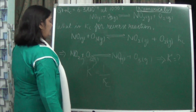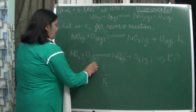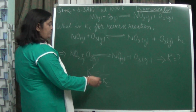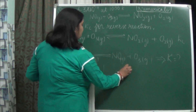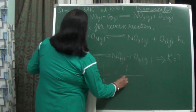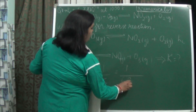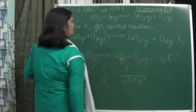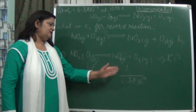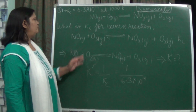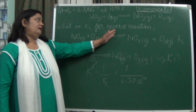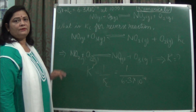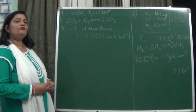In this numerical, it is only asking about the Kc in the reverse reaction. So Kc in the reverse reaction will be the reciprocal of the Kc in the forward direction. Now find the value of K dash: it will be 1 upon 6.3 into 10 to the power 14. Just solve it and you will get the value of Kc in the reverse direction. Now let us move on to the second question.